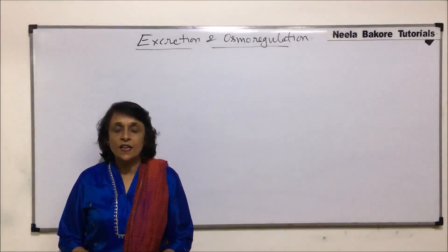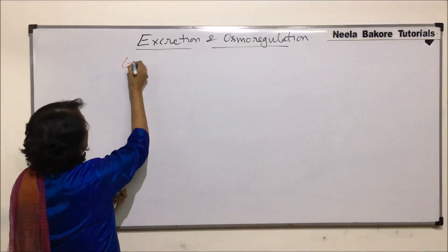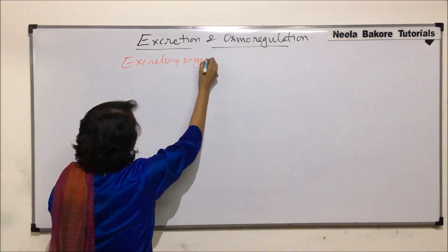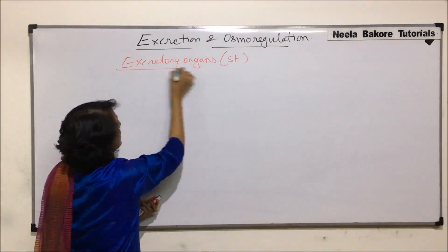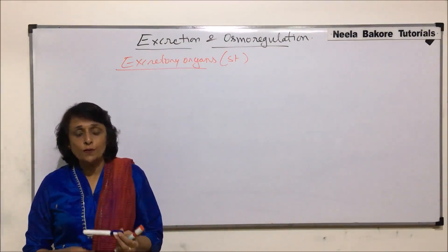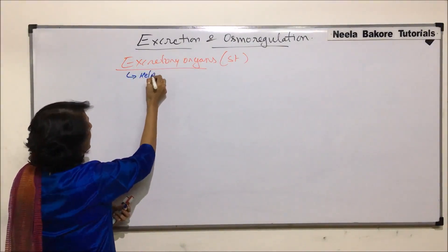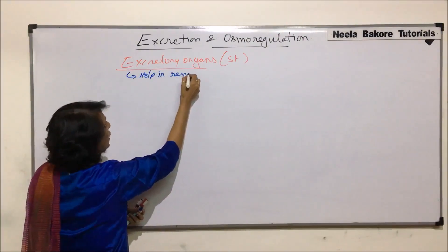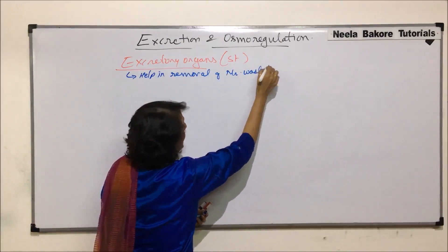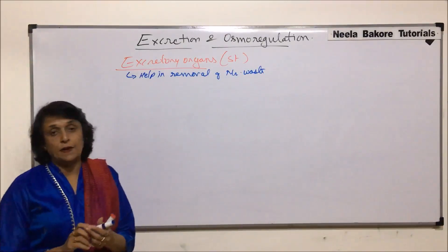We will start discussing excretory structures or excretory organs. These are the structures or organs which help in elimination of nitrogenous waste. Depending upon which waste is eliminated, their functioning is going to be different.